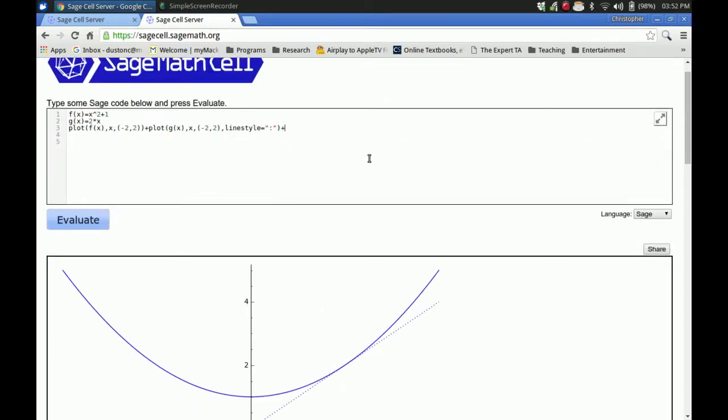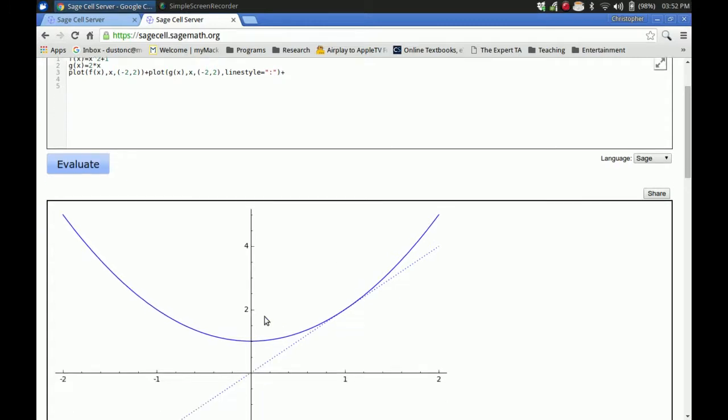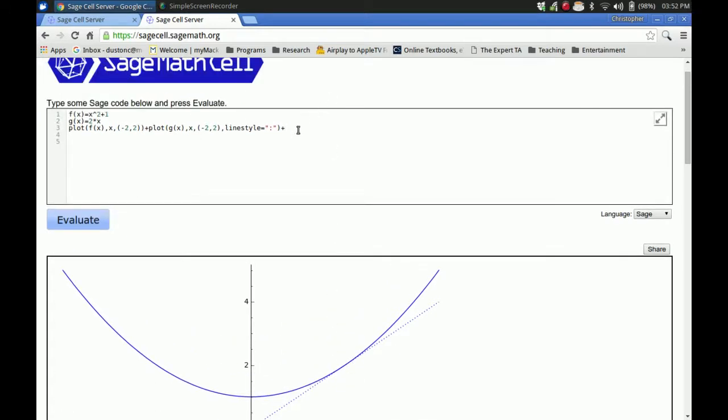So in addition to that, you can also add points. So let's say I want to add to this plot that specific point where these two functions intercept. That's pretty easy because you can just type point. And of course you have to figure out what point you want. In this case, I happen to know that the point is 1, 2.